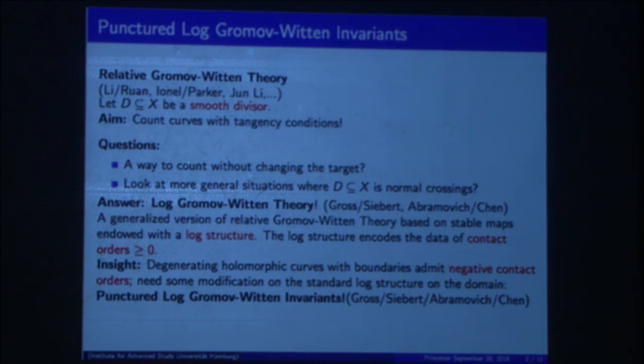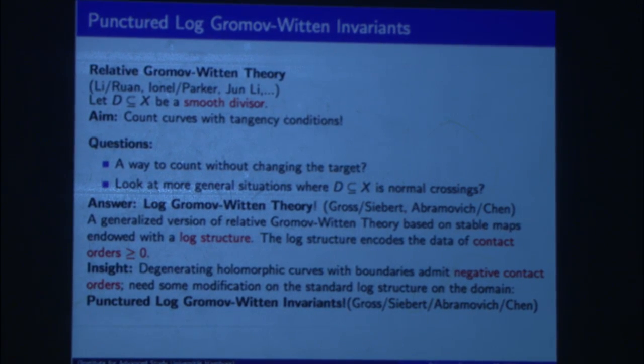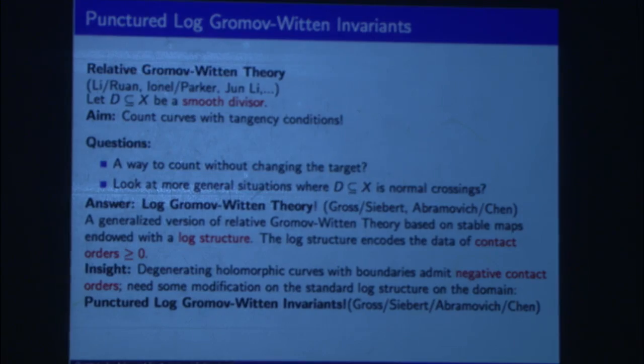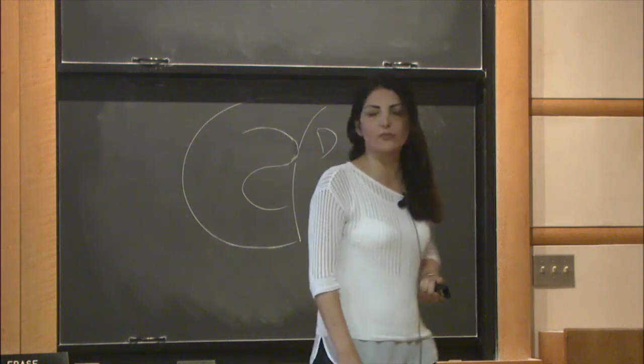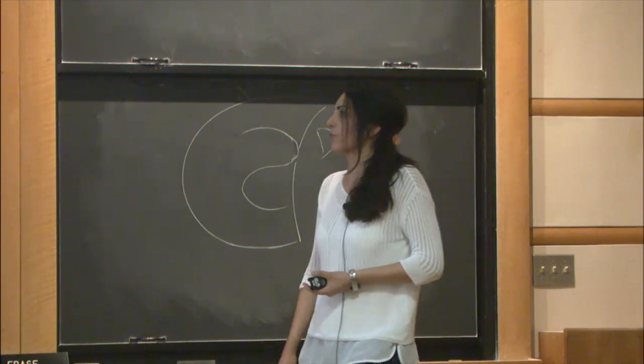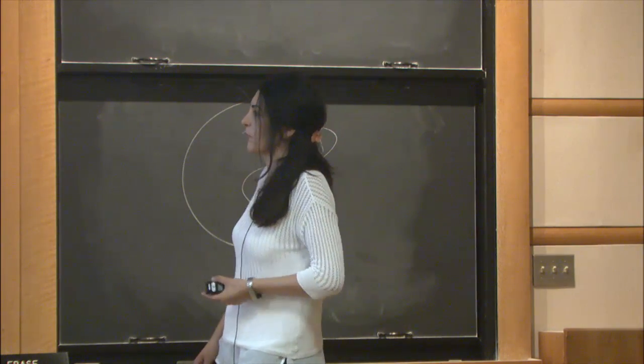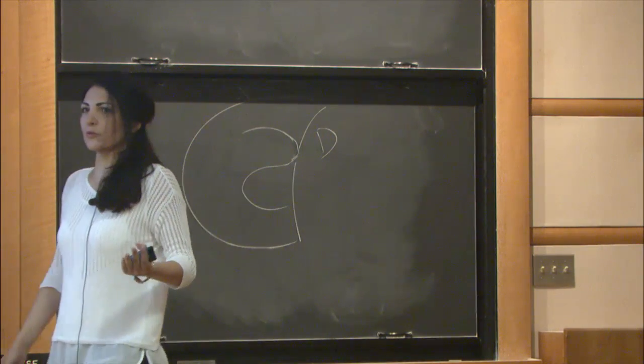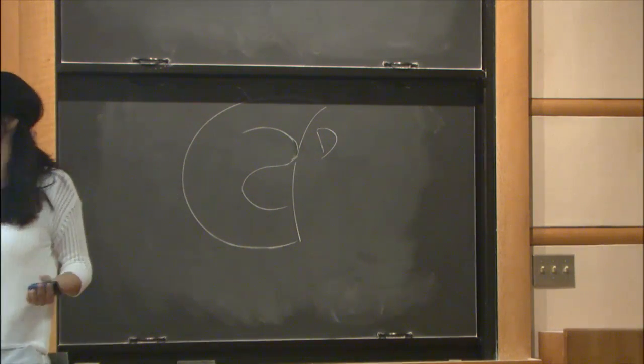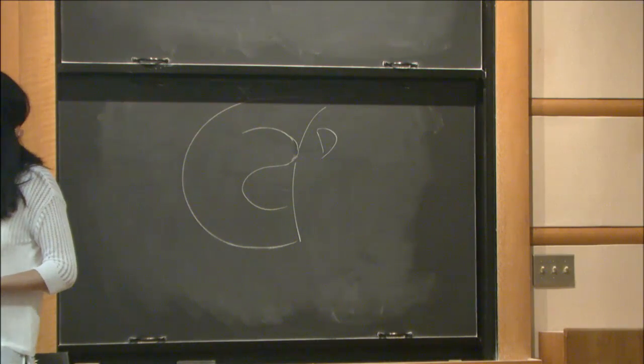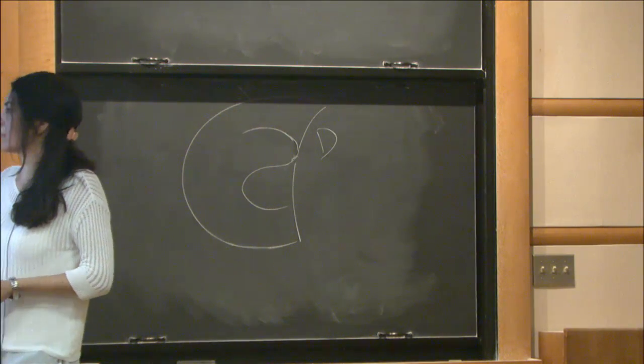So log Gromov-Witten theory is a generalized version of relative Gromov-Witten theory where you can also consider not only smooth divisors but ones with normal crossing singularities. And you're encoding the contact orders with some structure called a log structure. So you end up with both your domain and your target with a structure called a log structure, and this determines the contact orders.